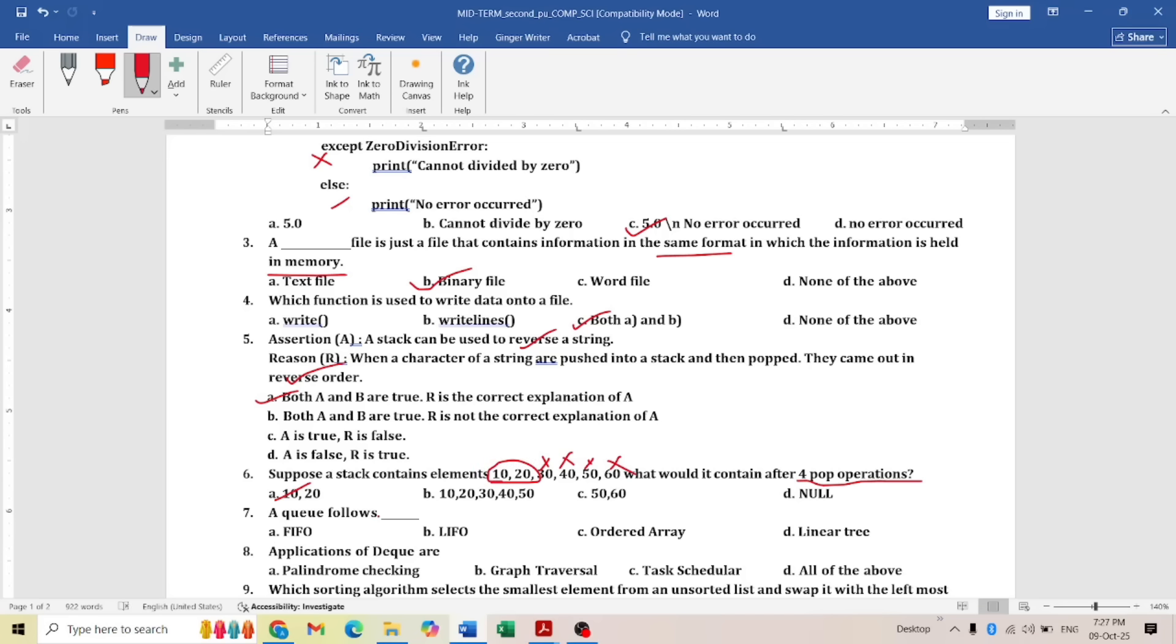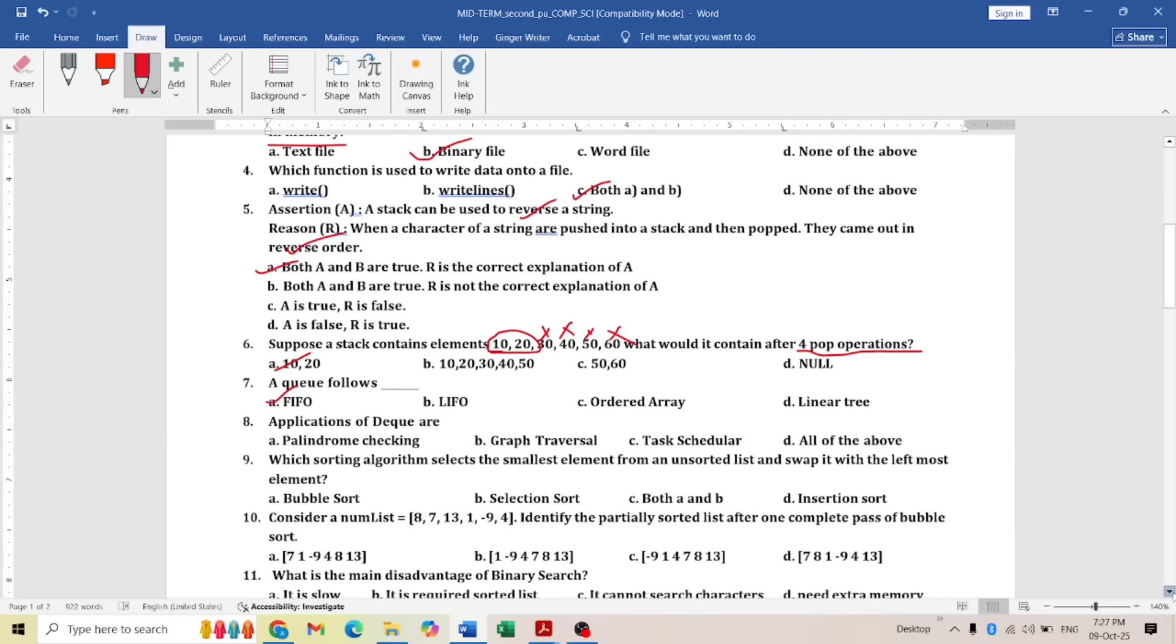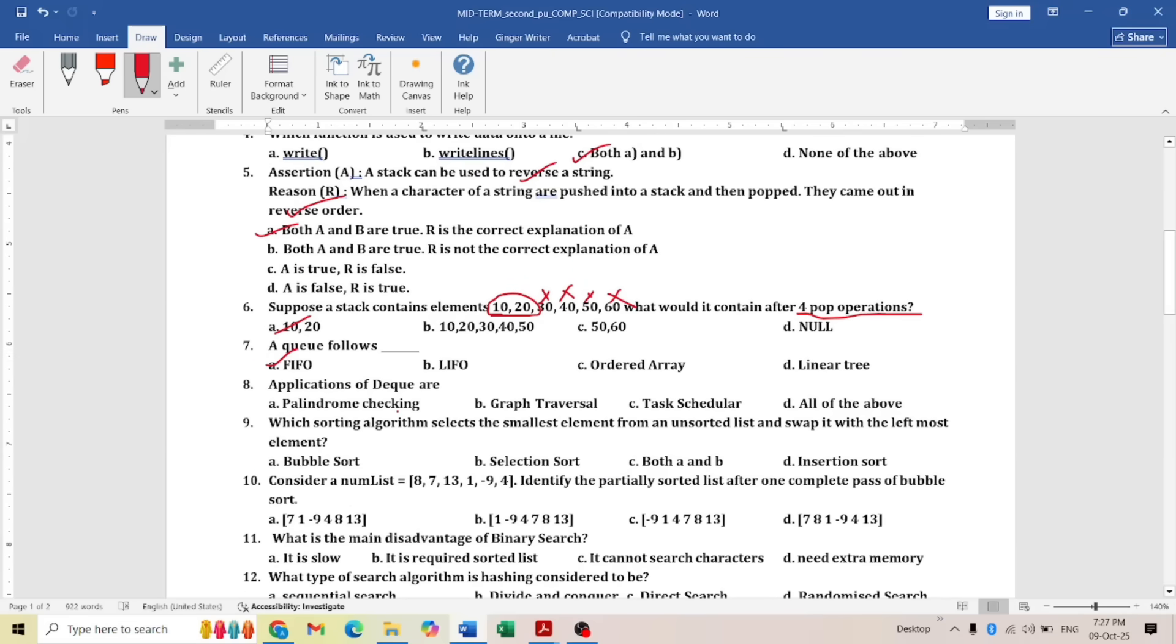Queue follows what principle? It's following the FIFO principle—first in, first out. Application of deque: palindrome checking, graph traversal, task scheduler—all of the above is the answer. Which sorting algorithm selects the smallest element? This is the keyword: from an unsorted list and swaps it with the leftmost element. Selection sort is the answer.